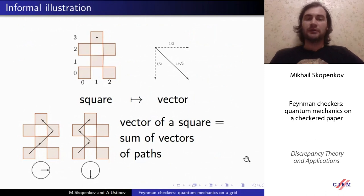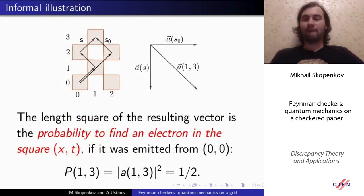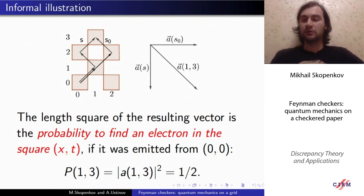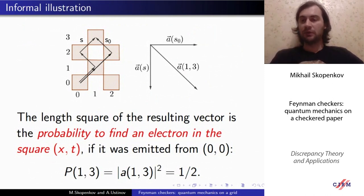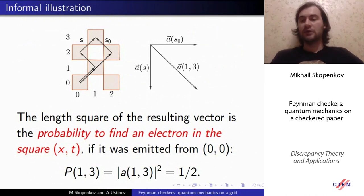The final part of the definition: the squared length of the resulting vector is the probability to find an electron in the square with coordinates x and t, if it was emitted from the origin. We denote this number by p(x, t). For example, in the situation just considered, the probability to find the electron in the square with coordinates one and three is one half — it is the squared length of the vector computed in the previous slide.